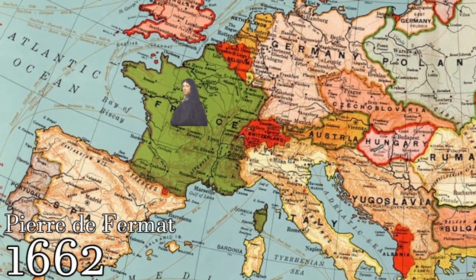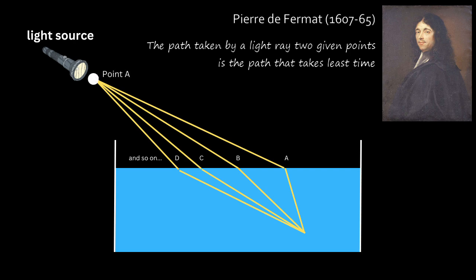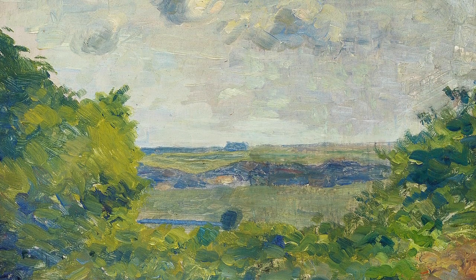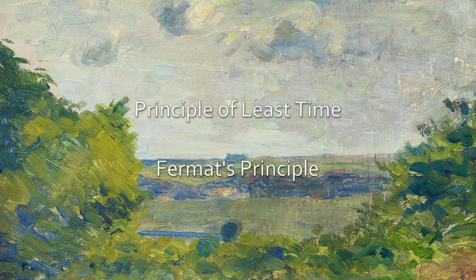In 1662 Pierre de Fermat proposed that the path taken by a ray between two given points is the path that can be travelled in the least time. For instance, if point A is present in some medium and point B in some other medium, the trajectory of light is such that it minimizes time. This principle is known as principle of least time, or simply Fermat's principle.